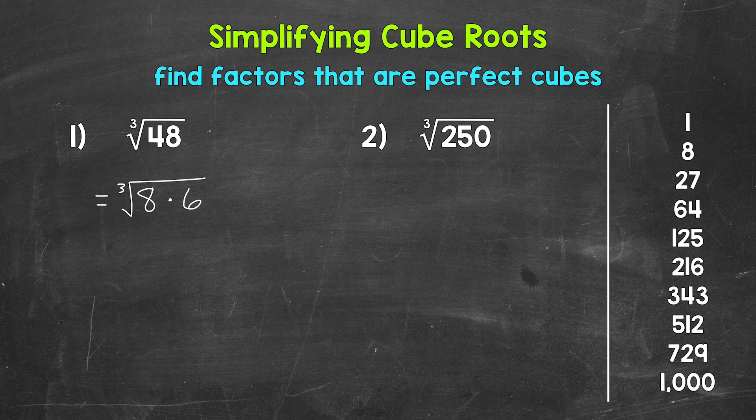So let's rewrite the cube root of 48 as the cube root of 8 times 6. Now the multiplication or product property of cube roots lets us split this into the cube root of 8 times the cube root of 6.